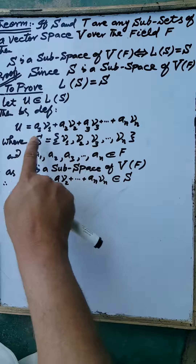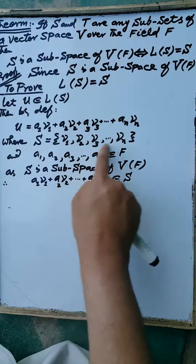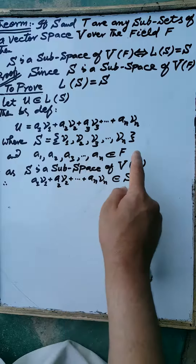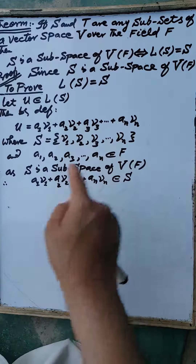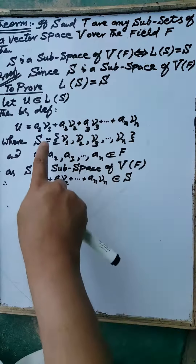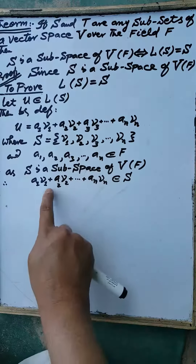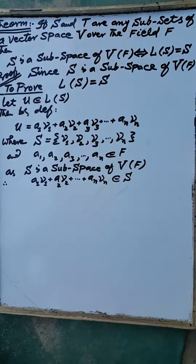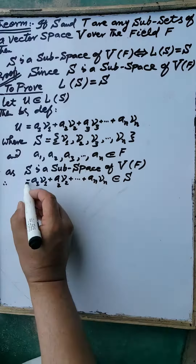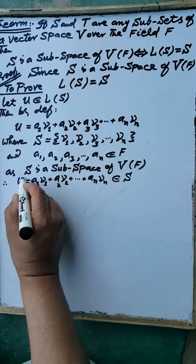the element U can be written as a linear combination of the elements of the set S: v1, v2, up to vn, where each a1, a2, up to an are elements of the field. As the set S is a subspace of the vector space V over the field F, these are elements of the set S. Therefore the linear combination of the elements of the set S again belongs to the set S, and by the above result the linear combination of the elements of the set S is equal to U.